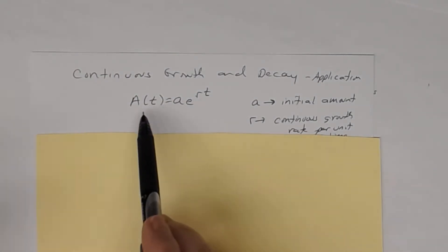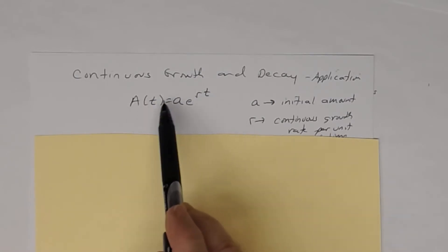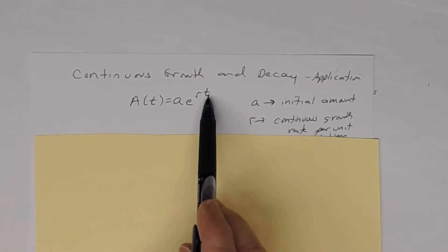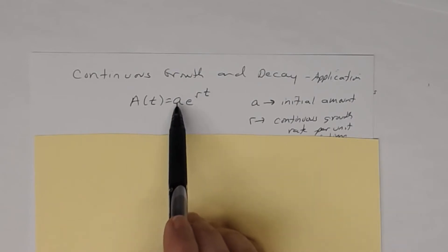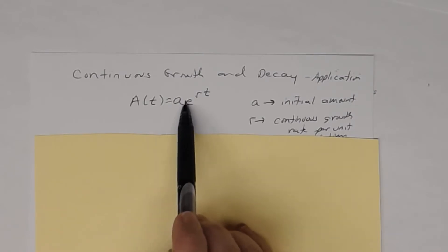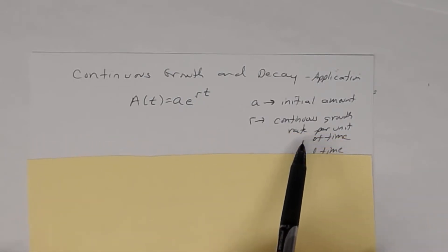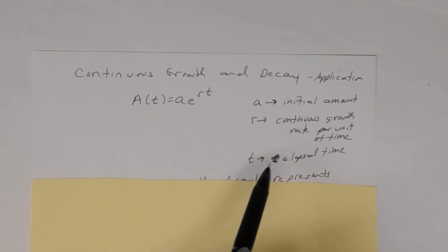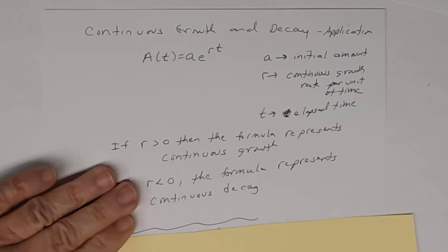So here's the formula — it always looks like this. A(t), where t is the time, equals A times e to the rt. A is the initial amount, r is the continuous growth rate per unit of time, and t is the time.